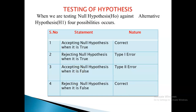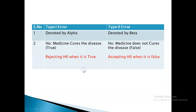In these four cases, accepting the null hypothesis when it is true is right, and rejecting the null hypothesis when it is false is also right. But rejecting the null hypothesis when it is true, or accepting the null hypothesis when it is false, is an error. Here, rejecting the null hypothesis when it is true is said to be Type 1 error, and accepting the null hypothesis when it is false is said to be Type 2 error.